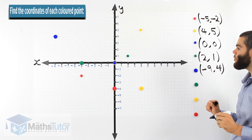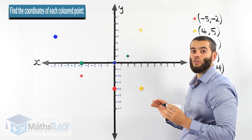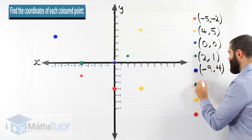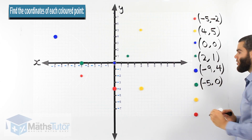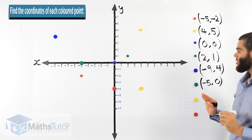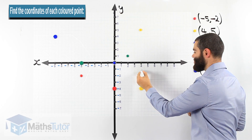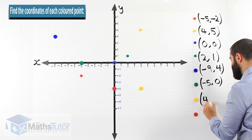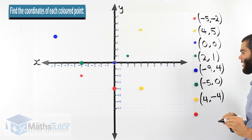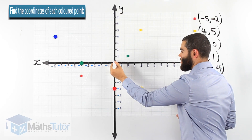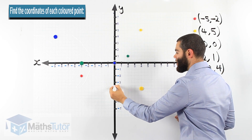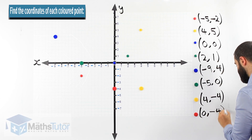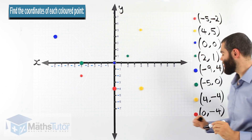The second green point is on the x-axis at negative 5 and doesn't go up or down, so on the y-axis it's 0 — giving us (-5, 0). The yellow point is at 4 on the x-axis going down to negative 4 on the y-axis, so it's (4, -4). The red point is at 0 on the x-axis and goes down to negative 4, so it's (0, -4).